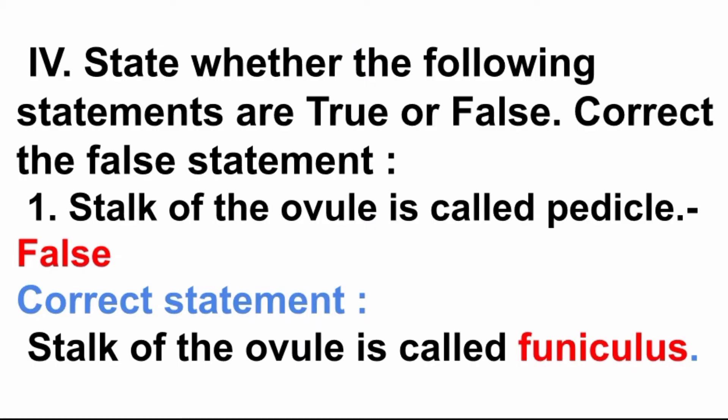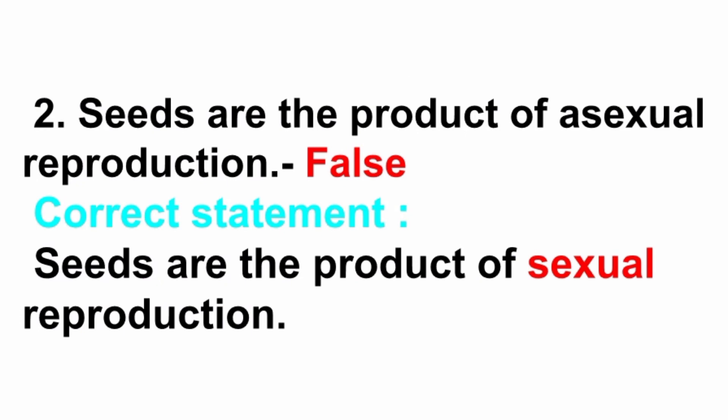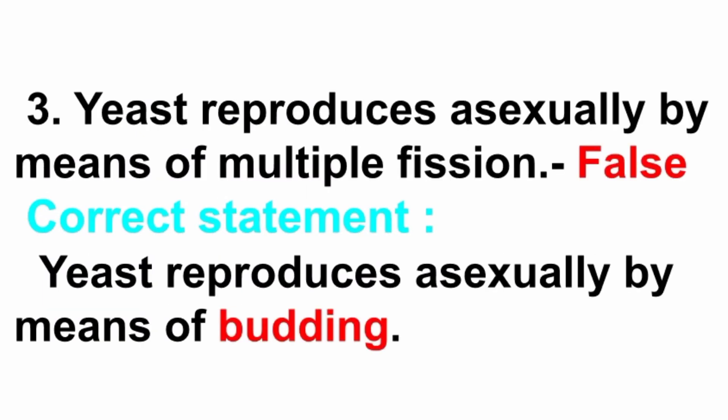Fourth section: state whether the following statements are true or false, and correct the false statement. First: stalk of the ovule is called petiole — answer is false. Correct statement: stalk of the ovule is called funiculus. Second: seeds are the product of asexual reproduction — answer is false. Correct statement: seeds are the product of sexual reproduction. Third: yeast reproduces asexually by means of multiple fission — answer is false. Correct statement: yeast reproduces asexually by means of budding.